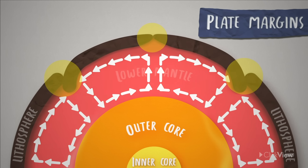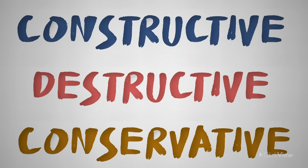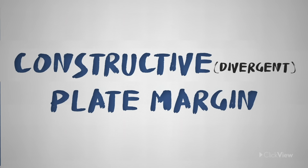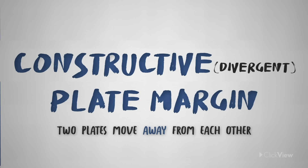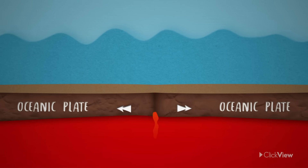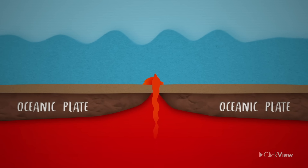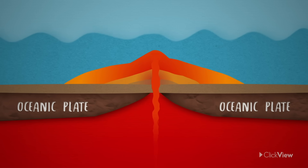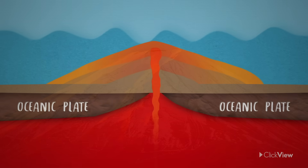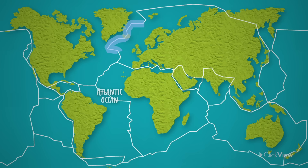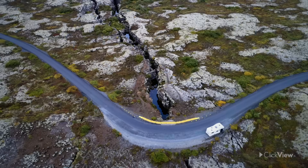Different tectonic plates meet each other at their boundaries, which are known as plate margins. There are three types of plate margins, depending on what kind of movement occurs between the two interacting plates. At a constructive or divergent plate margin, two plates move away from each other. This movement forms a gap between plates, which allows magma to seep through and cool to form new geological features such as volcanoes. The Mid-Atlantic Ridge under the Atlantic Ocean is an example of a constructive plate margin.